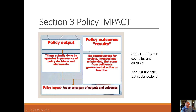What we really look at is that it's global, and it's different in different countries and cultures. It's not just financial, but it's social actions. So what we really have is policy input, and as a result, we have results — the consequences, intended or unintended, that come from government action. So you have the results, you have the output. One is what is actually done in the policy, the second is the impact of them. Together, it's the policy impact.